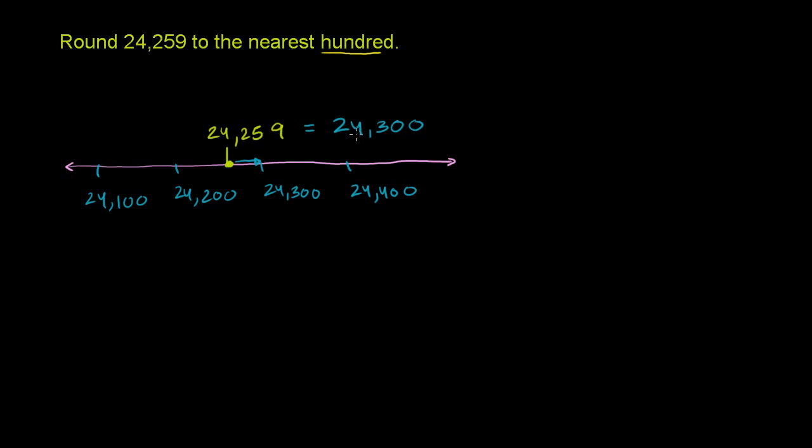Now, that's kind of the conceptual understanding of why it's even called the nearest hundred. The nearest hundred is 24,300. But every time you do a problem like this, you don't have to draw a number line and go through this whole process, although you might want to think about it.